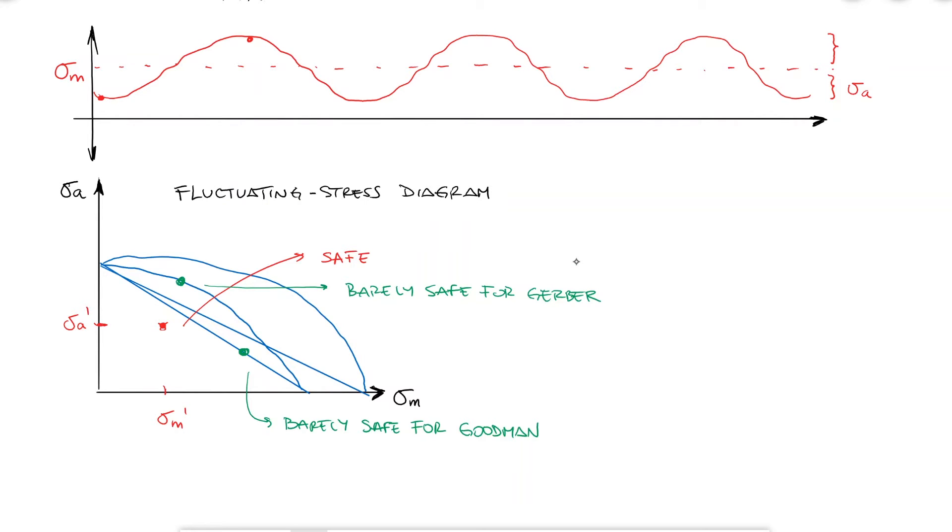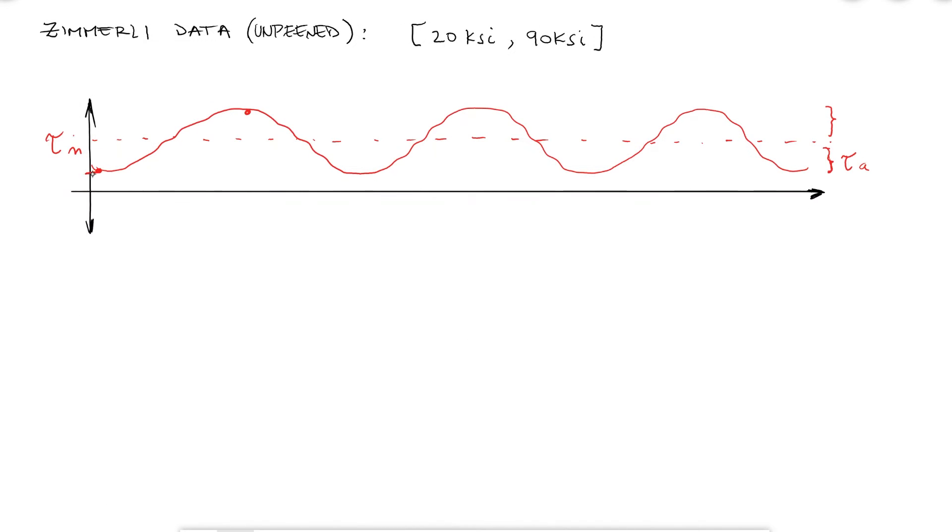Zimmerli tested unpeened springs, and we'll get to what that means in a minute, with torsional stresses in the range between 20 and 90 ksi. He found that this fluctuating stress condition was found on the boundary between finite and infinite life, which means the springs were still fine and didn't fail after 10^6 cycles, which is the infinite life limit we use for all steels, since we know the steel won't fail if it already hasn't by 10^6 cycles.